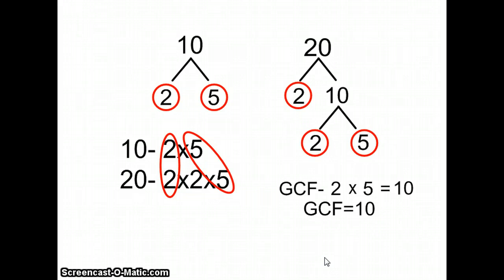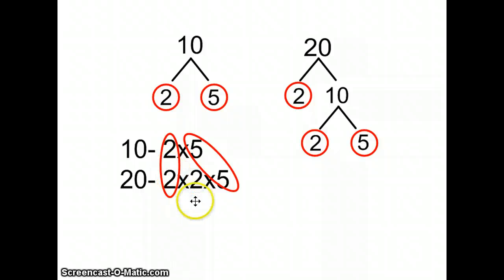Another use for prime factorization is to find the least common multiple of a group of numbers. And everything is the exact same process from the factorization to the writing the lists one on top of the other. The only difference is this number or whatever numbers are left over, you have to use those as well.